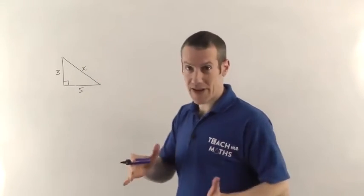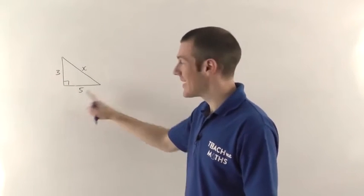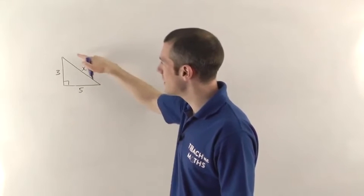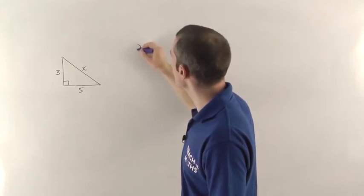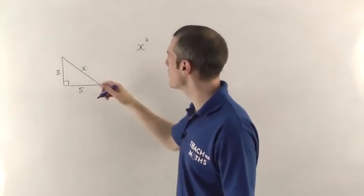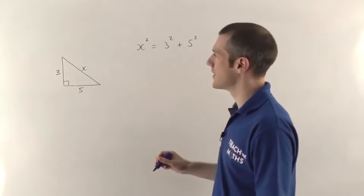So as we saw in Pythagoras' theorem video, you want to square the two shorter sides, add them together and that will give you the longer side squared. So I could say that X squared, the length of the longest side, is going to be 3 squared plus 5 squared.